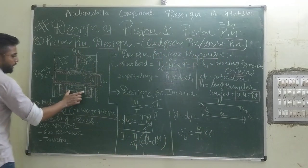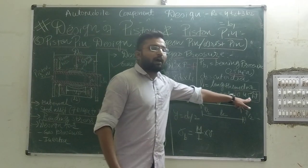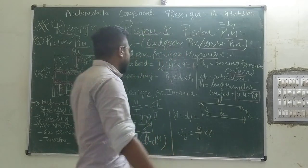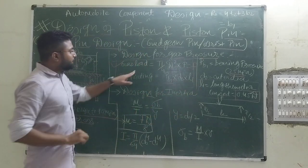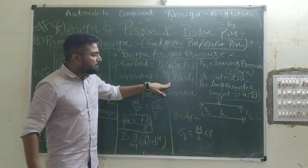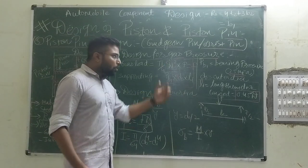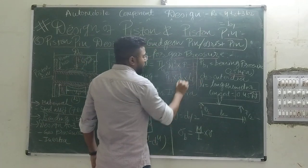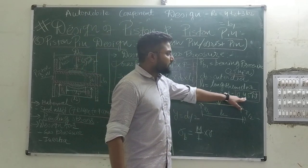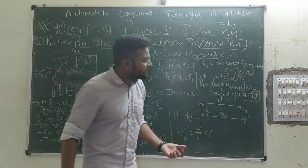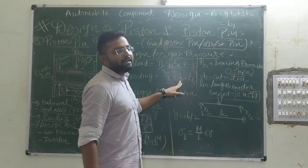D₀ is the outside diameter of the Piston Pin, and L1 is the length of the connecting rod on the Piston Pin, which is also the width of the small end of the connecting rod. It is taken as 0.45 of the total diameter D. So from the bearing stress equation — since the gas load must equal the bearing reaction — you can determine L1 from L1 = 0.45D, and then find D₀.